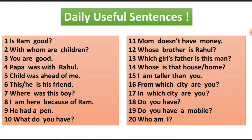Hello friends, see the daily useful sentences in English language. Is Ram good? With whom are children? You are good. Papa was with Rahul. Child was ahead of me. This or he is my friend. Where was this boy? I am here because of Ram. He had a pen. What do you have? Mom doesn't have money.